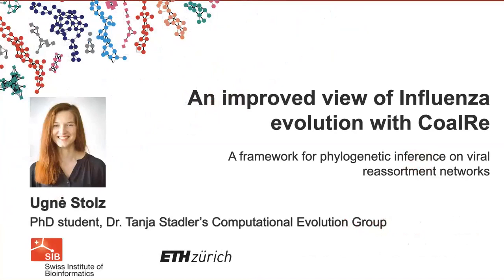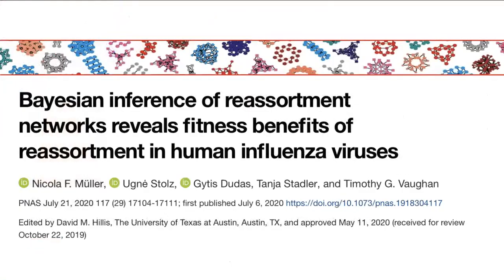Hello and welcome to today's presentation on an improved view of influenza evolution with CoalRe. I am Ugner Stoltz, a PhD student at Tania Stadler's Computational Evolution Group, and will be introducing you to a new framework for phylogenetic inference on viral reassortment networks. It is based on a recent publication by Nicola Müller, Tim Vaughan, Tania Stadler, Gietus Dudas, and me, which focused on reassortment patterns of human influenza viruses.